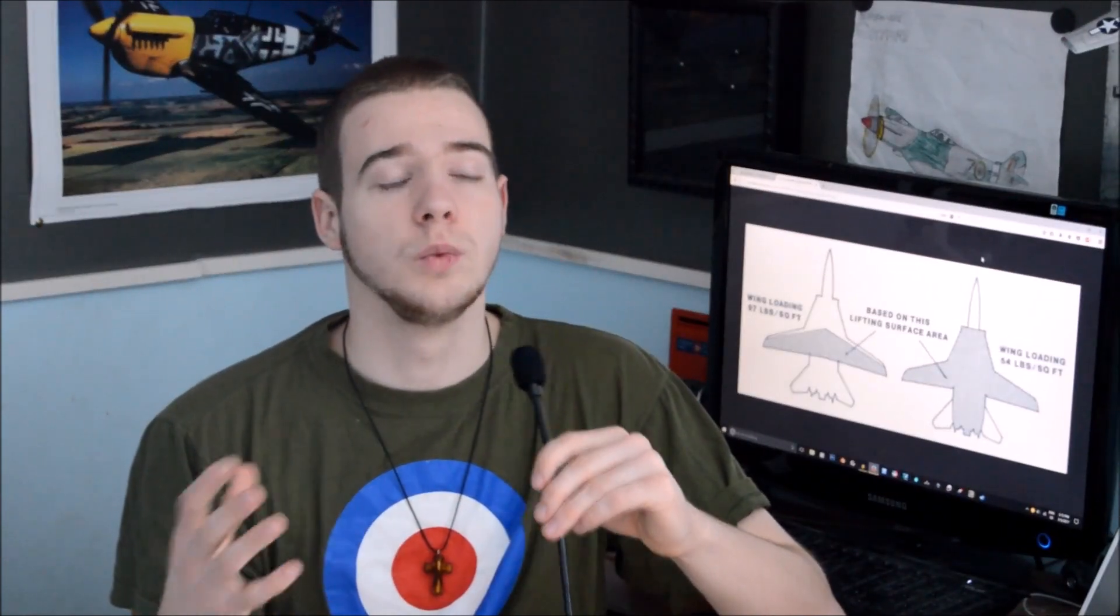By definition, wing loading can be changed by either lowering the mass of an aircraft or by increasing the wing area. An aircraft with low wing loading will either be very light or it will have large wings. Similarly, an aircraft with high wing loading will either have very small wings or be very heavy.